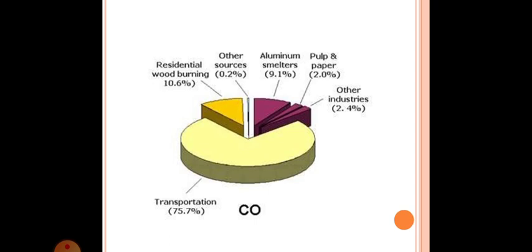Residential wood burning 10.6%, Other sources 0.2%, Aluminum smelters 9.1%, Pulp and paper 2%, Other industries 2.4%, Transportation 75.7%. As shown in this figure.